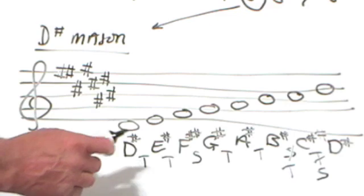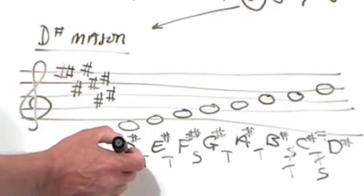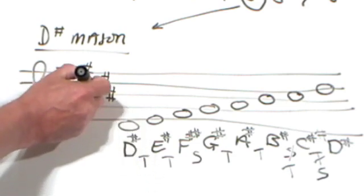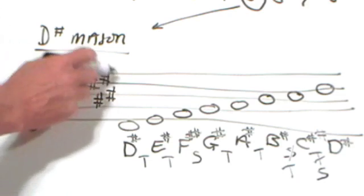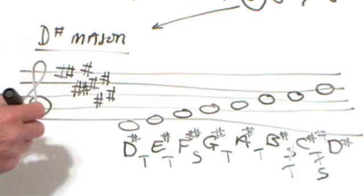So the key of C sharp. Bigger pardon, the key of D sharp major. Has nine sharps including an F double sharp and a C double sharp. It's beginning to get a little bit crowded here. One, two, three, four, five, six, seven, eight, nine sharps in the key of D sharp major.